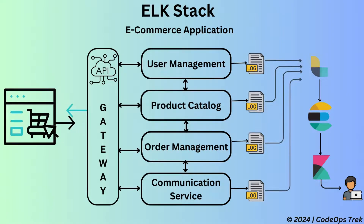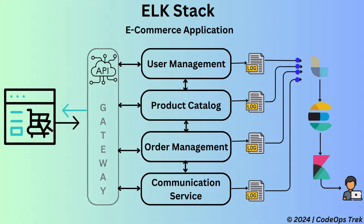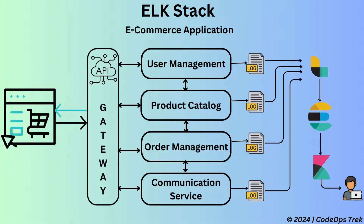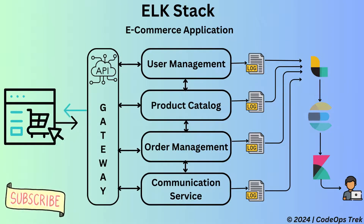Each microservice generates its logs into log files with the .log extension. First, Logstash collects logs from all microservices. For example, logs from the Order Management Service might contain error messages or transaction details. Logstash is configured to pull these logs from their respective files, process them, parse and enrich the log data, and then send it to Elasticsearch for storage.